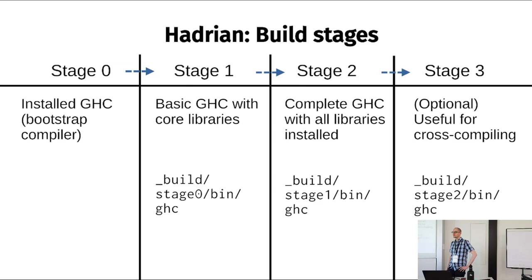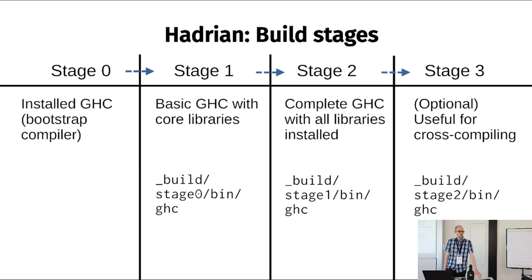In summary for stages: if you want stage X, look in build/stage-(X-1). An additional reason for multiple stages, beyond performance considerations, is to enable using GHC as a library — the interface files need to be written by the same version that reads them. So compiling stage two with stage one ensures the final GHC can be loaded into itself.